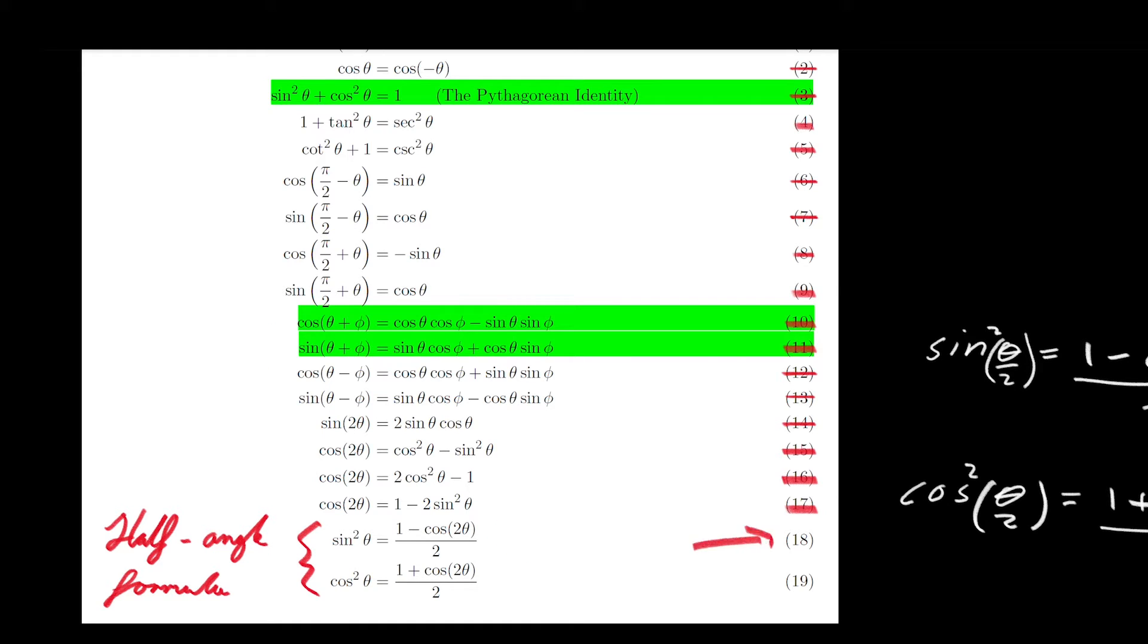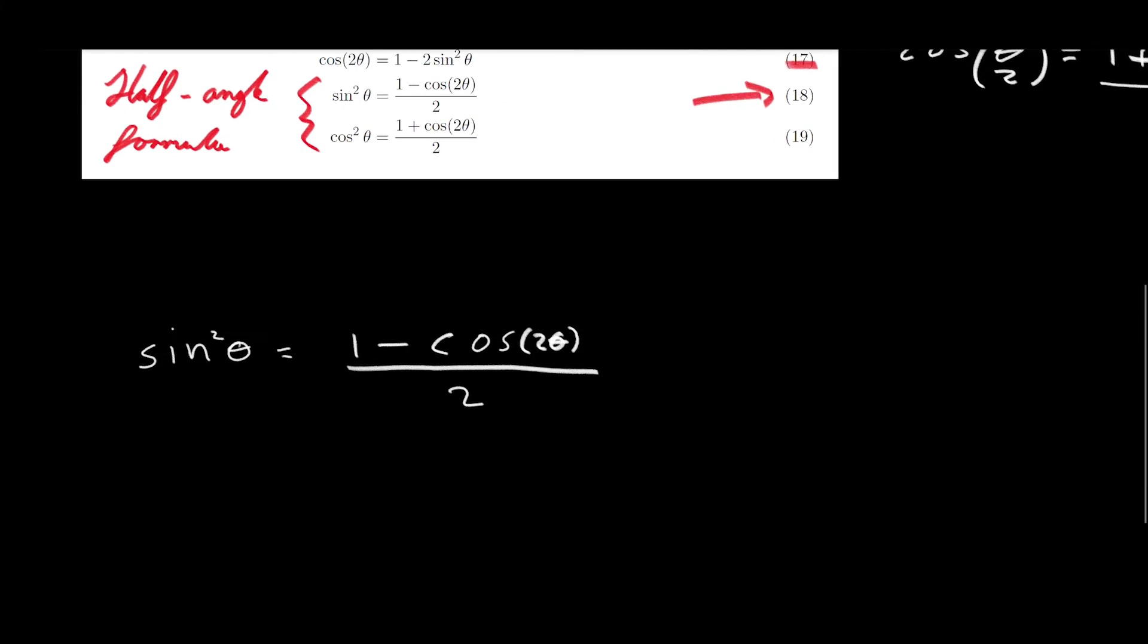We will prove trigonometric identity 18 first. Now, when we prove 18, all we have to do... These are some of the most straightforward proofs from all of the proofs that we've done. So let's start the proof. All we have to do is rearrange trigonometric identity 17.